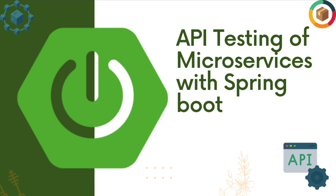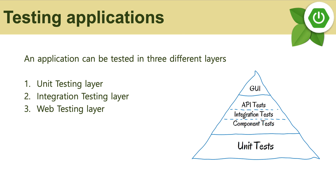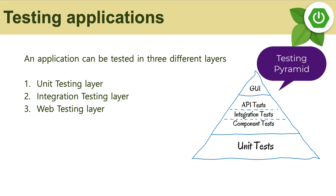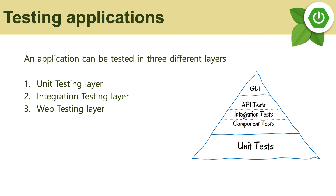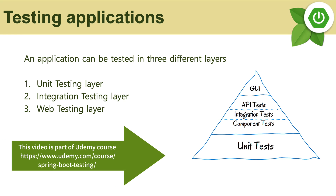Before we start with API automation testing in Spring Boot, let's understand the application testing concept itself. An application can be tested in three different layers — this is what the testing pyramid basically says: the unit testing layer, the integration testing layer, and the web testing layer. These are the three automation testing layers that exist in the testing world.